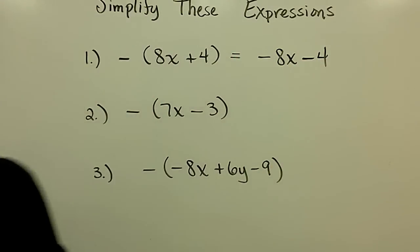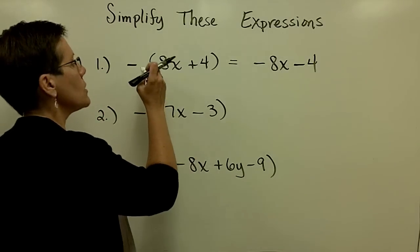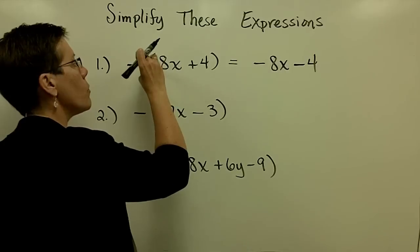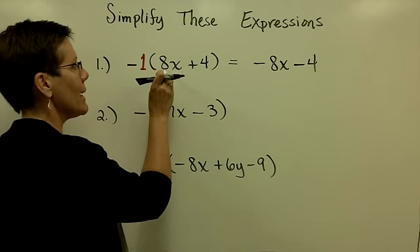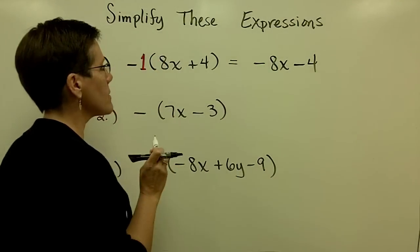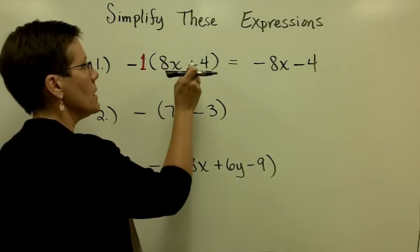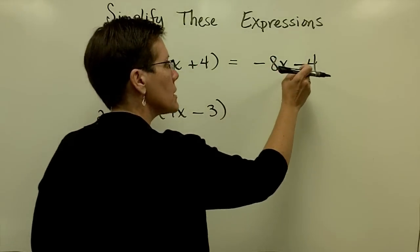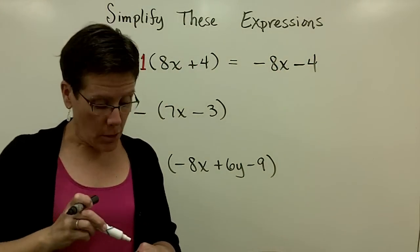A lot of people like to look at this problem as though I were asking you to take a negative 1 and multiply it by 8 to get the negative 8x and a negative 1 and multiply it by the positive 4 to get the minus 4. You can do it either way.